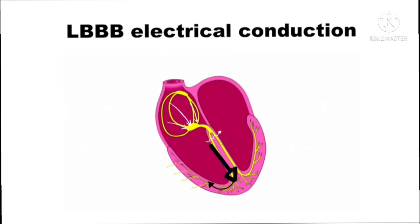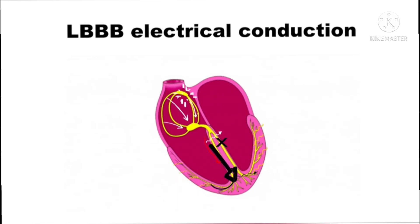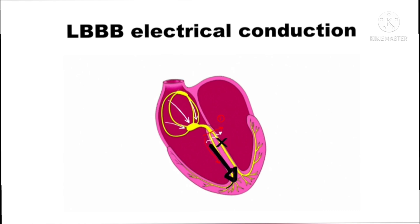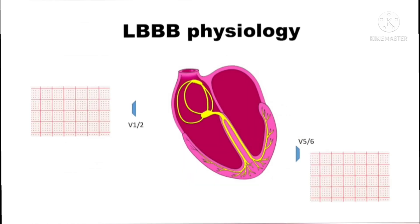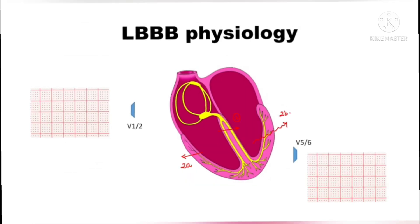What is the physiology of LBBB? As demonstrated in this cartoon, the left bundle branch is blocked. The current passes down the AV node through the right bundle branch into the right ventricle. The septum depolarizes from right to left — that is the first electrical event. Next, the right ventricle depolarizes (event 2A), soon followed by aberrant conduction of the left ventricle (2B). This aberrant, prolonged depolarization leads to QRS widening — one of the key manifestations of LBBB morphology.